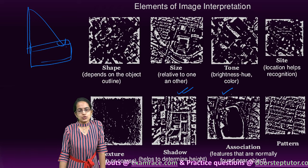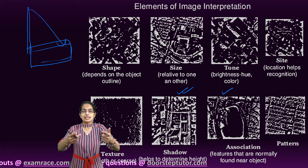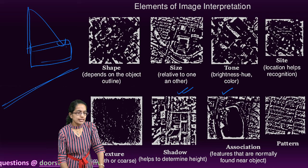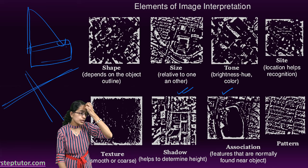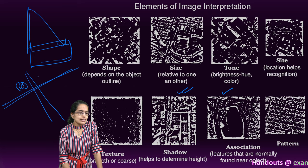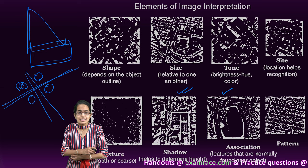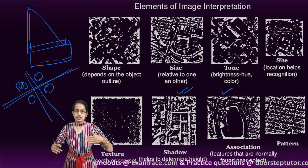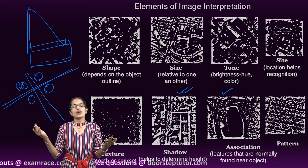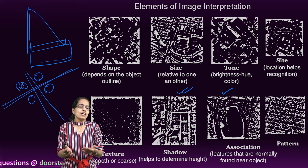Then we have association. Association helps us to create or interpret an image in a much smoother way. Let's say I explain that there are two important transport arteries going across one another and then there is a densely populated region or a settlement. Then obviously, this makes sense because there is an association. There is transport artery and that transport artery would be cutting a region where there would be definitely people living.